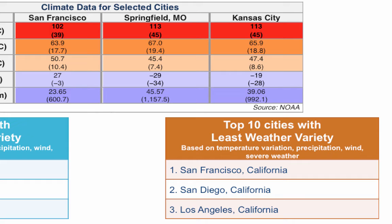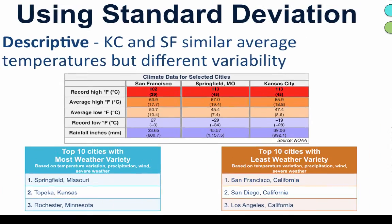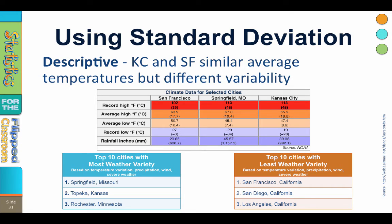Like Goldilocks eating baby bear's porridge, it is not too hot and not too cold. Here in Springfield, Missouri, however, we can have university classes canceled for a snowstorm on Monday, shirt-sleeve weather in the low 70s on Friday, and thunderstorms this weekend. When it comes to weather, we're pretty rangey here in Springfield, Missouri. For the people in San Francisco, the weather is pretty much the same from day to day.